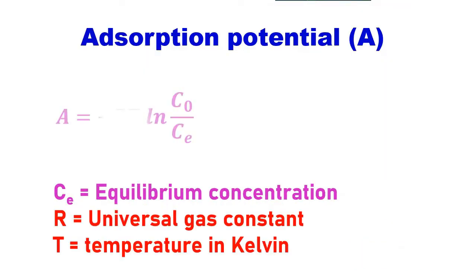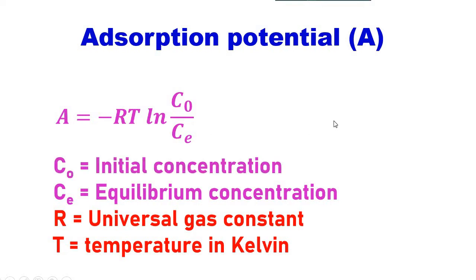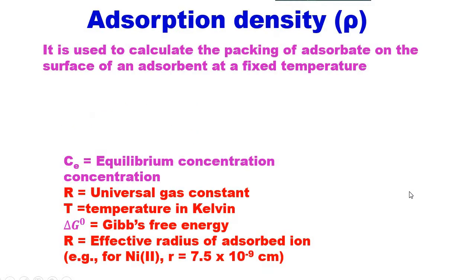Adsorption potential can be written as A equals minus RT ln C0 divided by Ce, where Ce equals equilibrium concentration, C0 is initial concentration, R is the universal gas constant, T is the temperature in Kelvin.